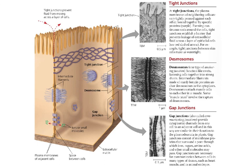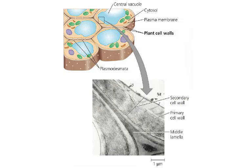There are a couple different kinds of junctions. Tight junctions hold cells together tightly and prevent leaks. Desmosomes are anchoring junctions that help anchor cells together. Gap junctions are gaps between cells that allow exchange of materials — for example, cardiac cells in your heart have gap junctions that help them keep their ions synchronized so they can all contract as one. Plants have a similar system called plasmodesmata — little windows between cells that help plant cells exchange materials with each other.